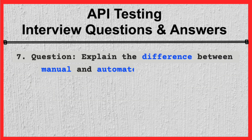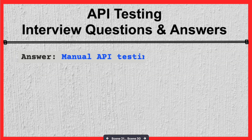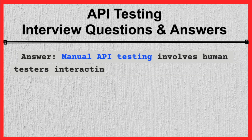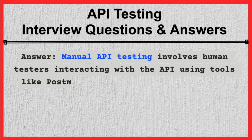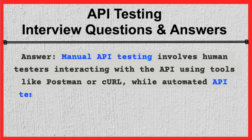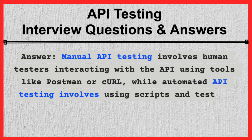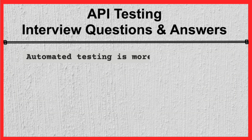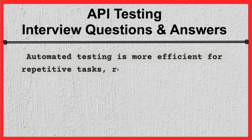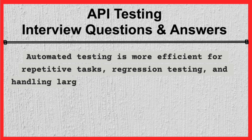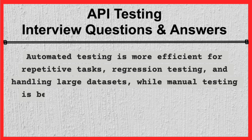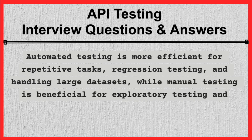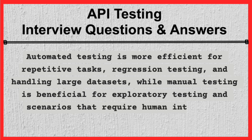Question 7. Explain the difference between manual and automated API testing. Answer. Manual API testing involves human testers interacting with the API using tools like Postman or Curl, while automated API testing involves using scripts and testing tools to execute test cases. Automated testing is more efficient for repetitive tasks, regression testing, and handling large datasets, while manual testing is beneficial for exploratory testing and scenarios that require human intuition.